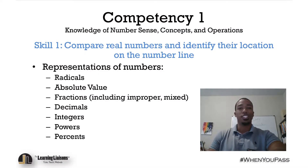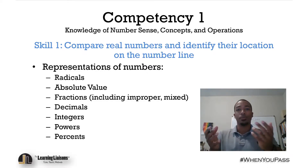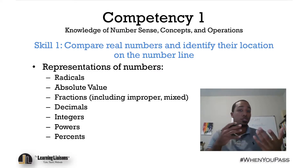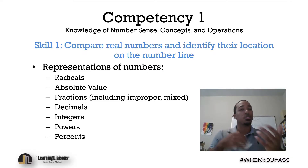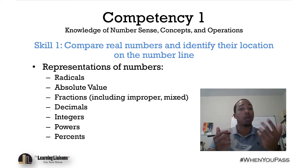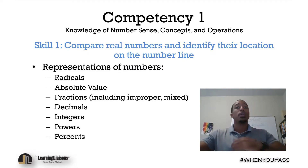Welcome to Competency One. We'll begin with Skill One: compare real numbers and identify their location on the number line. What we're doing is comparing different representations of numbers, which include radicals, absolute value, fractions, decimals, integers, powers, percents, and regular numbers as well.